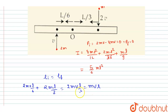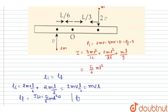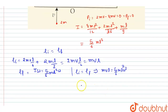The final angular momentum equals I times omega, where I was already calculated as 5ml²/6. Equating initial and final angular momentum: mvl equals (5/6)ml² times omega. Solving, omega equals mvl divided by (5ml²/6).